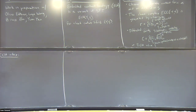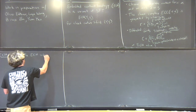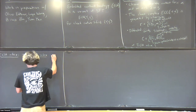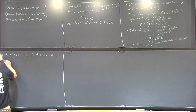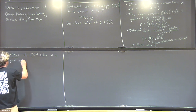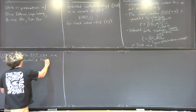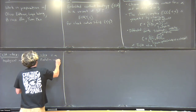I want to talk about the ECH index, which is what this talk is going to focus on—specifically the intersection theory that goes into it. I don't really have time to explain everything else that goes into the construction. The ECH index is a kind of topological modification of the Fredholm index. Let me try to make that a little more precise.